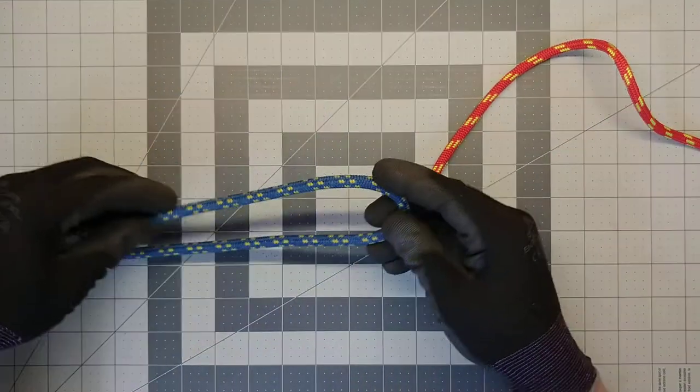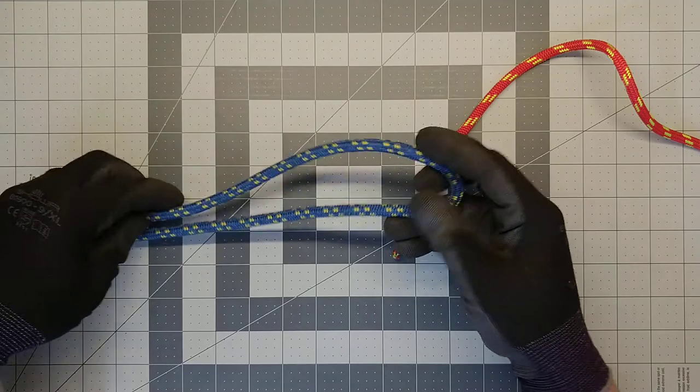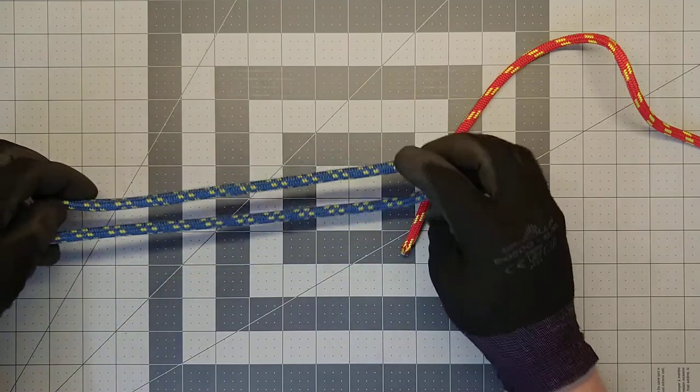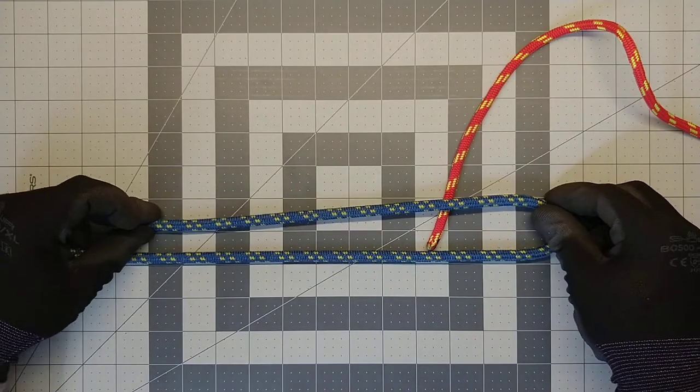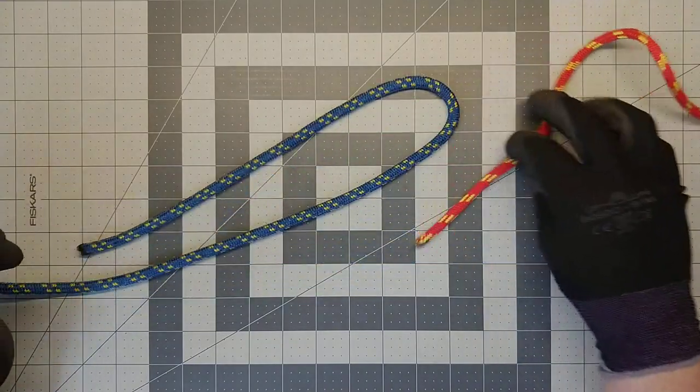Close cousin to the bowline. We're going to take rope number one and make a bight. We want to leave a good tail on it, a good 12-inch tail or so, 10-inch tail.